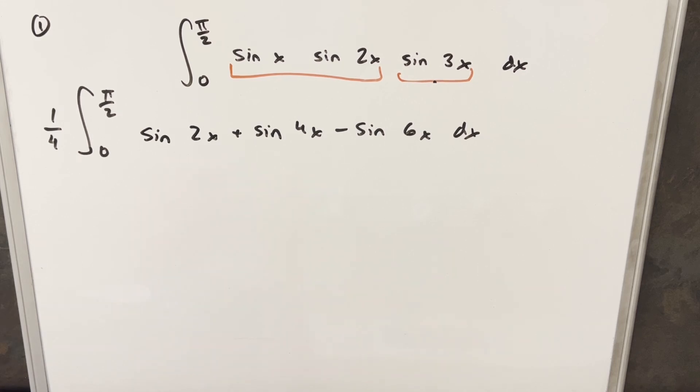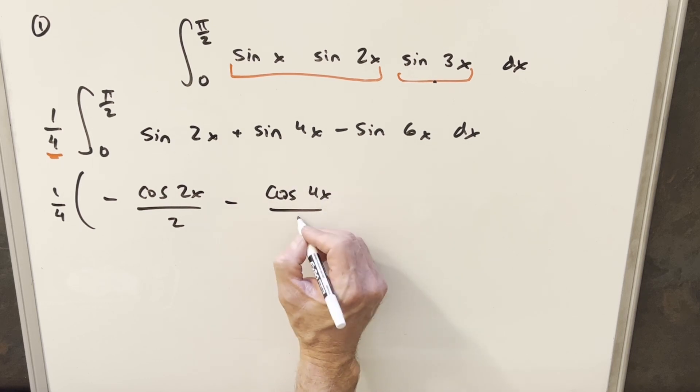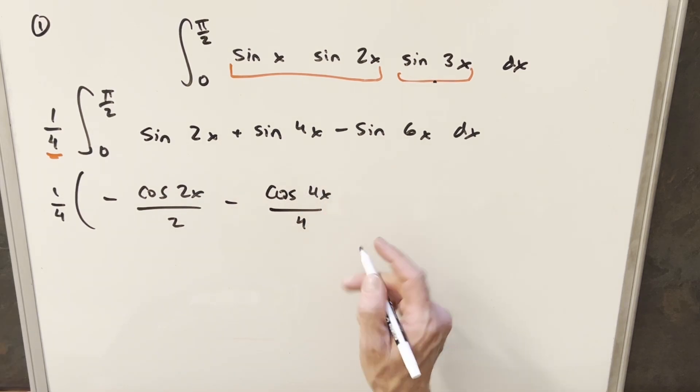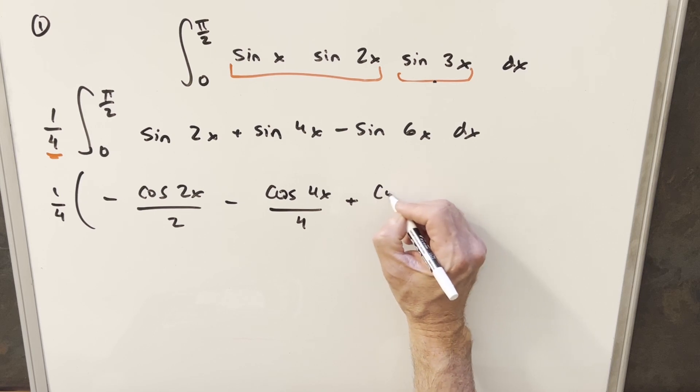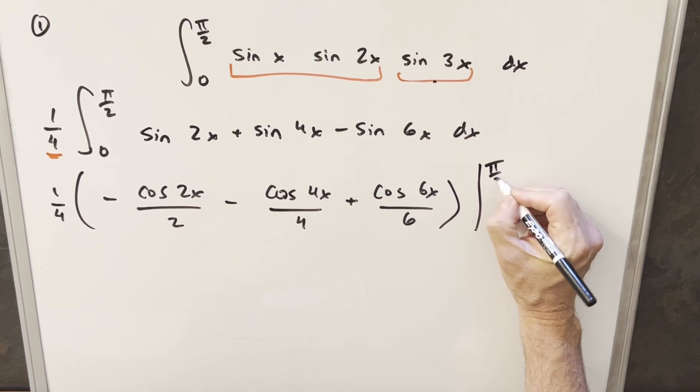OK, now I've taken the 1 fourth we had from the previous board and just brought it up front of the integral as a constant. And so now we can integrate this thing. So I have my 1 fourth. Integral of sine 2x is going to be minus cosine 2x over 2. Integral of sine 4x is going to be minus cosine 4x over 4. And then integral of minus sine 6x is going to be a plus cosine of 6x over 6. And we just need to evaluate this thing from 0 to pi over 2.